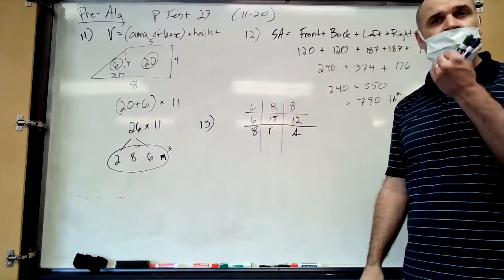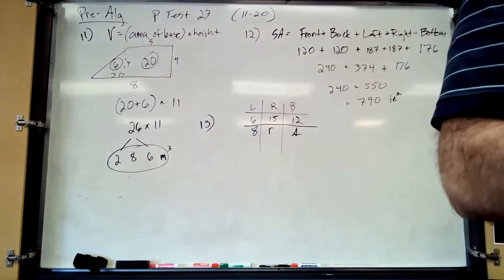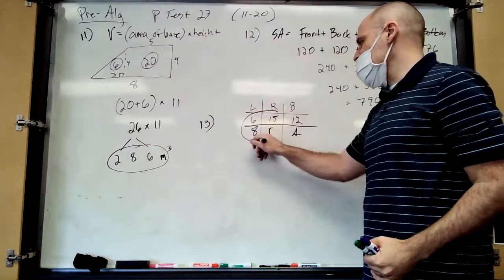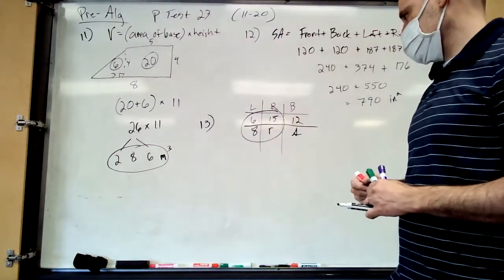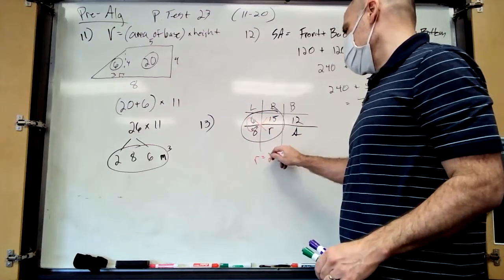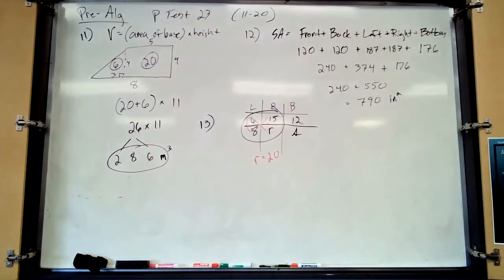There's a proportion right there: 8 times 15 divided by 6. You can also see it as 6 over 12 equals 8 over s, or 15 over 12 equals r over s. Let's find r first: 15 times 8 divided by 6 — that's 120 divided by 6 — so r equals 20.